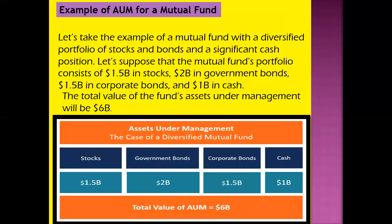Let's take an example of a mutual fund with a diversified portfolio of stocks and bonds and a significant cash position. Suppose a mutual fund's portfolio consists of $1.5 billion in stocks, $2 billion in government bonds, $1.5 billion in corporate bonds, and $1 billion in cash. The total value of the fund's Asset Under Management will be $6 billion — the sum of all investments the institution has made in stocks, government bonds, corporate bonds, and cash. The total capital market value of those securities that the institution has invested is known as the AUM.